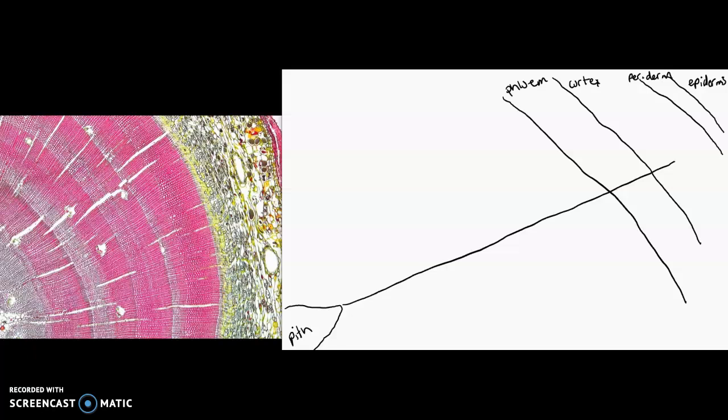Inside here we're going to have our wood, which is going to be the same thing as our xylem. And then that stripe is our vascular cambium. And then again, this is our xylem ray inside the xylem, and then our phloem ray inside the phloem.